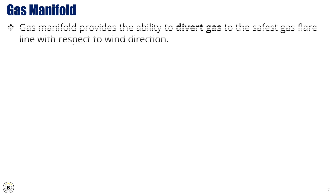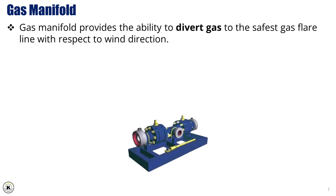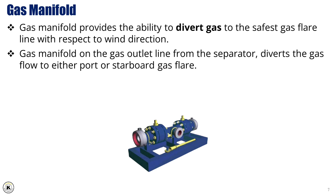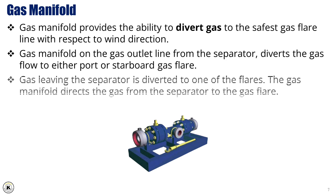The gas manifold provides the ability to divert gas safely to the appropriate gas flare line, depending on the prevailing wind direction. Positioned on the gas outlet line from the separator, the gas manifold is responsible for directing the gas flow to either the port or the starboard gas flare, ensuring safe dispersion of produced gas. Gas leaving the separator is channeled through the manifold and diverted to one of the designated flare lines. The gas manifold plays a critical role by offering flexible routing, enhancing operational safety, and adapting to changing environmental conditions during well testing operations.